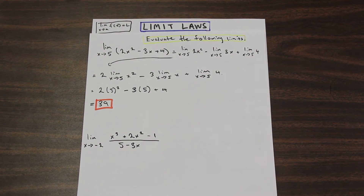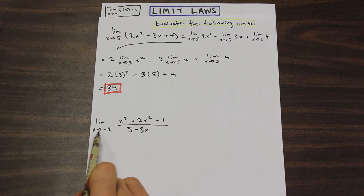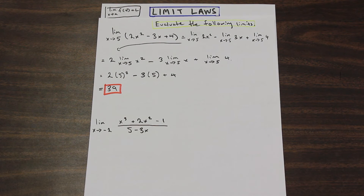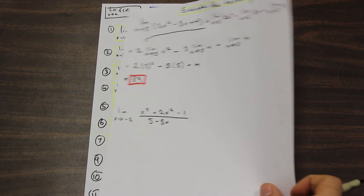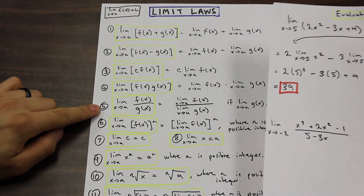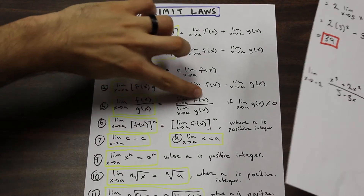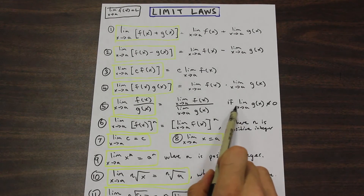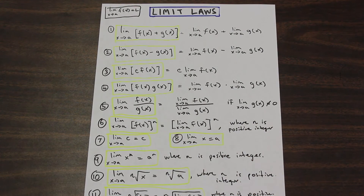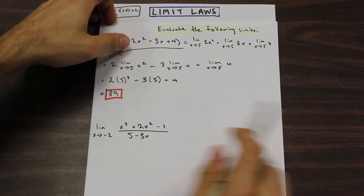Let's move on to the problem below — this one's a little bit trickier. If we plug in x equals 2 directly, we're going to see that we're dividing by zero, and unfortunately we can't do that. So let's go ahead and use the limit laws to solve it. Looking at limit law five, the limit as x approaches a of f of x over g of x equals the limit of the numerator over the limit of the denominator, but only if the limit of g of x is not equal to zero.